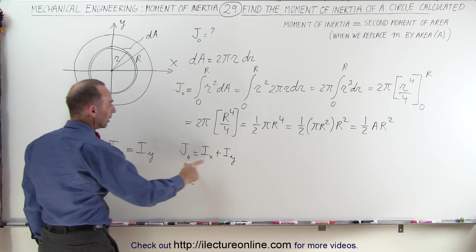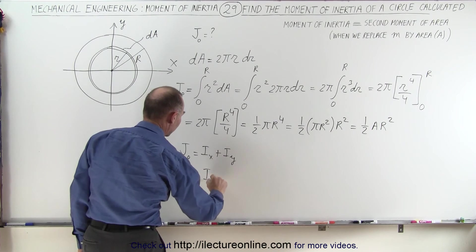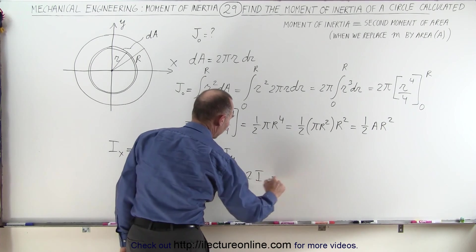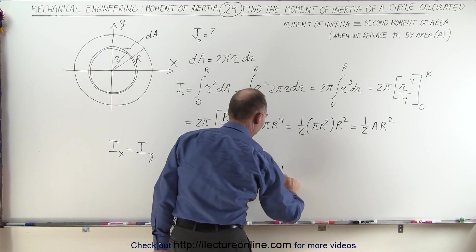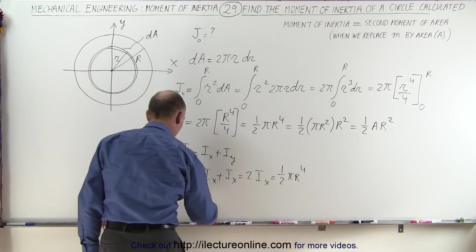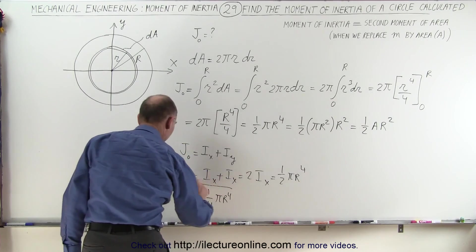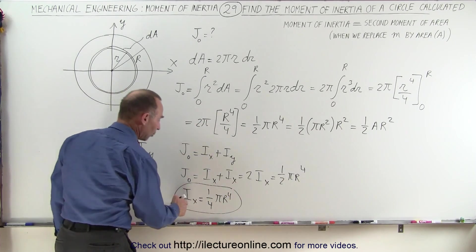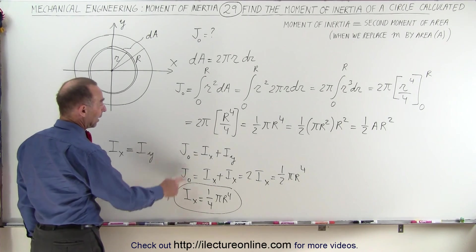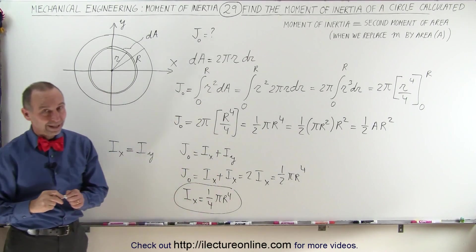So since they're equal to each other, that means we can replace one by the other. So the moment of inertia relative to the origin is therefore equal to i sub x plus i sub x, which is 2 times i sub x, and of course that is equal to 1 half pi r to the 4th, and therefore one of them, i sub x, should then be half of that, or 1 quarter pi r to the 4th. And so that's how we find the moment of inertia of the circle relative to the x-axis, which is equal to the moment of inertia relative to the y-axis because of symmetry. And we also found the moment of inertia of the circle relative to the origin. And that's how it's done.